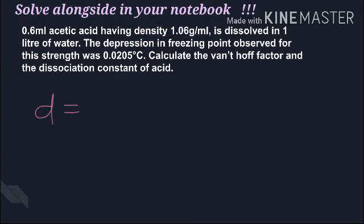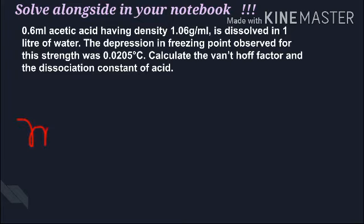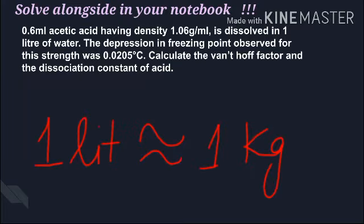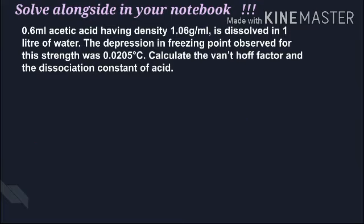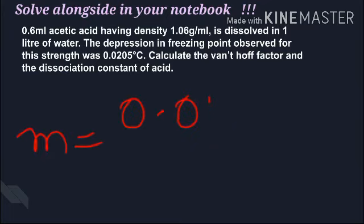What is given: 0.6 ml acetic acid and its density. From this we can get mass: d = m/v. We need to calculate molality. Molality is number of moles of solute upon mass of solvent in kg. 1 liter of water is nearly equivalent to 1 kg. Moles of acid: the molar mass is 60. Number of moles is 0.636 divided by 60, which gives 0.0106. So molality is 0.0106.